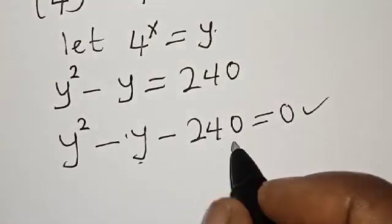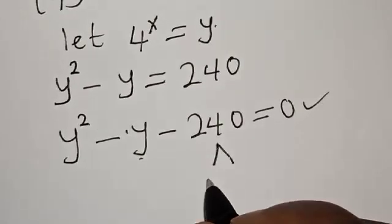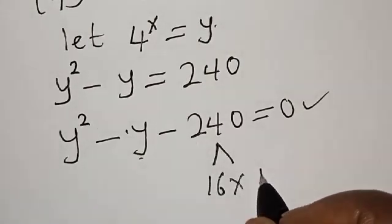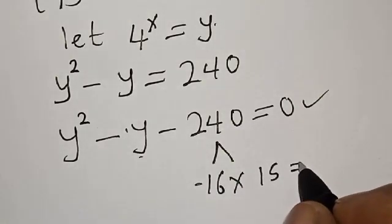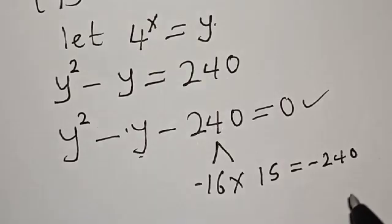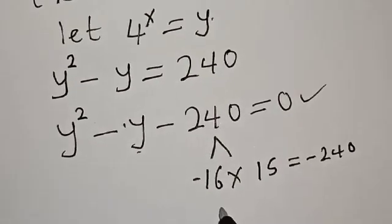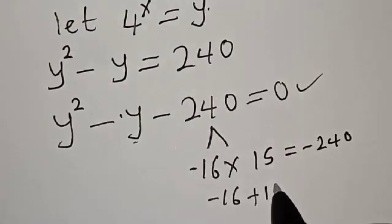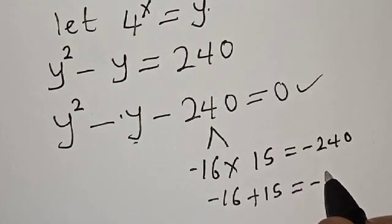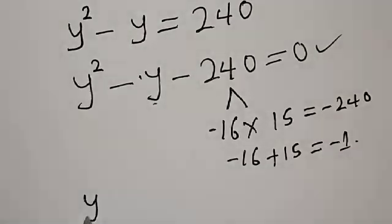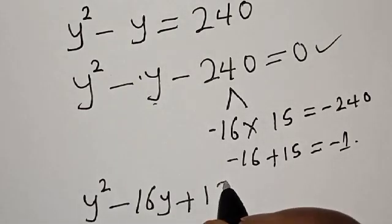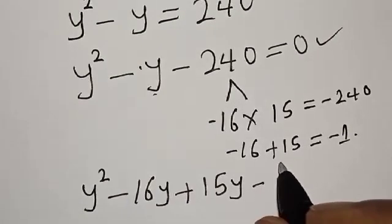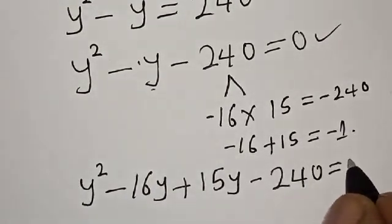Now, 240 is the same as 16 times 15. 16 times 15 is equal to positive 240. But if you have minus 16 times plus 15, this gives minus 240. And minus 16 plus 15 gives minus 1. Then our equation becomes y squared minus 16y plus 15y minus 240 is equal to 0.